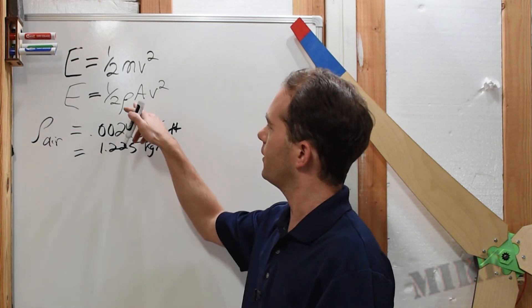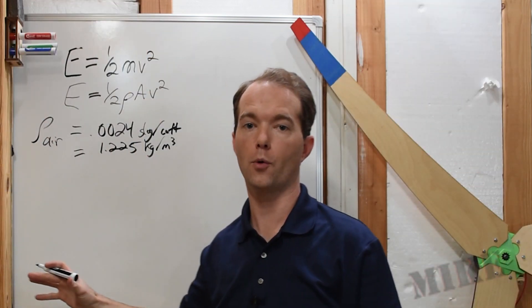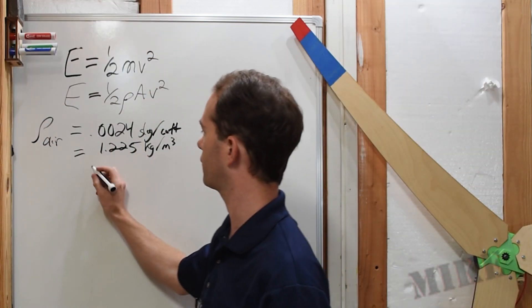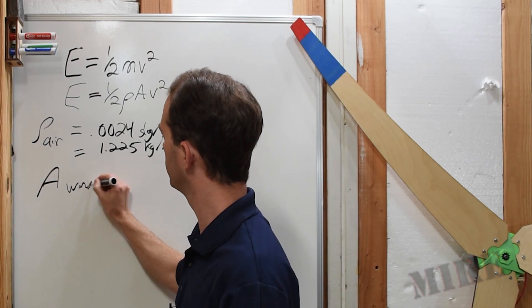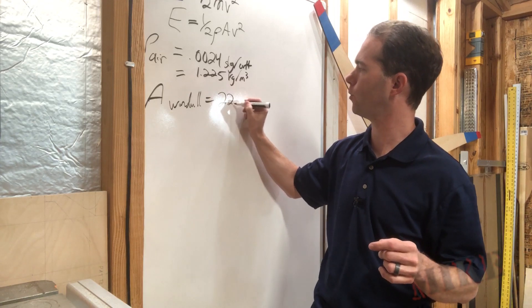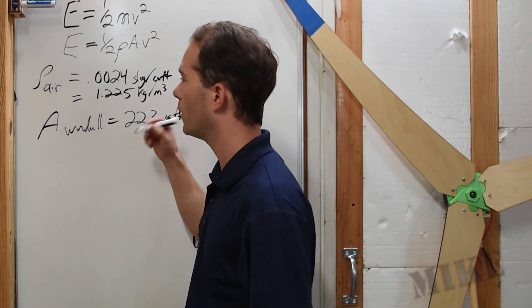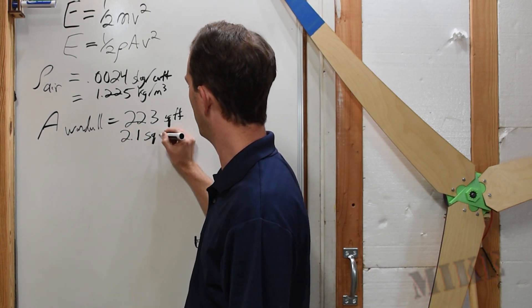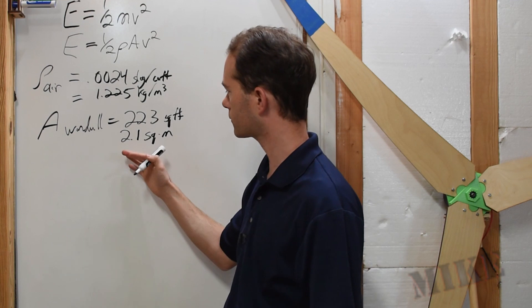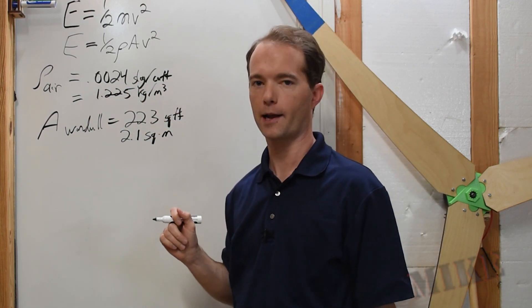So, we've got our density. The area is the capture area of our rotors. In this case, it's about 64 inches. The area for my windmill, I already calculated this, and I know this, is 22.3 square feet, which happens to be 2.1 square meters. So, here we've got the English and the imperial units, like I promised.